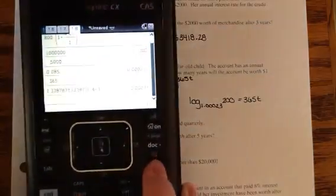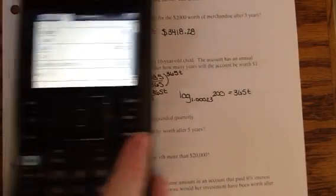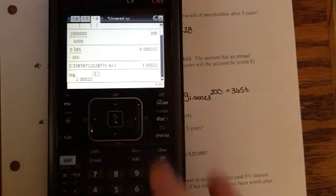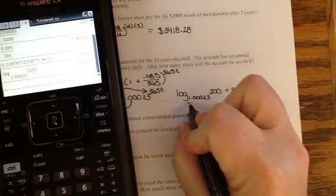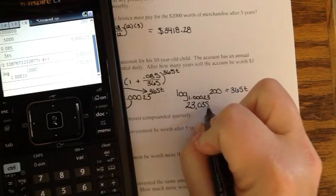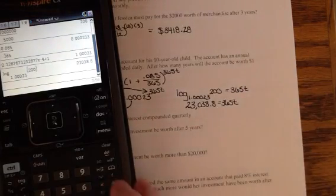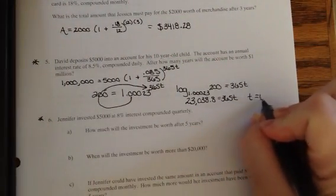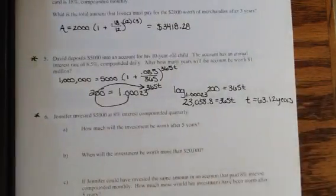And so now you can use your calculator. And I'm going to type this logarithm in. So I'm just going to type log. And it asks you what your base is. 1.00023 of 200. So now I have 23,038.8 equals 365t. And to solve for that, you're just going to take your answer and divide it by 365. And you should get that t equals 63.12 years. Make sure you label your answer.